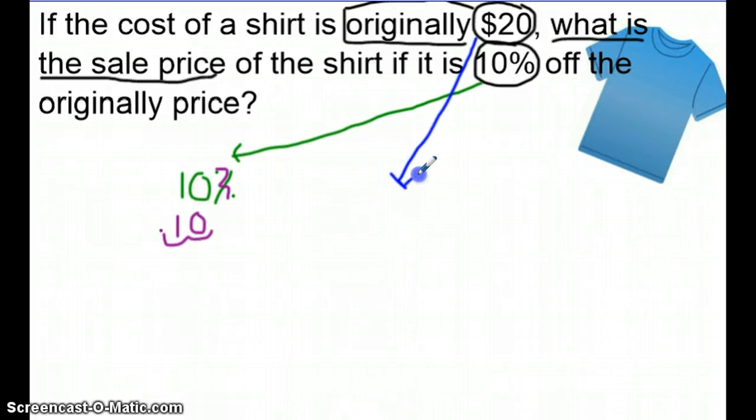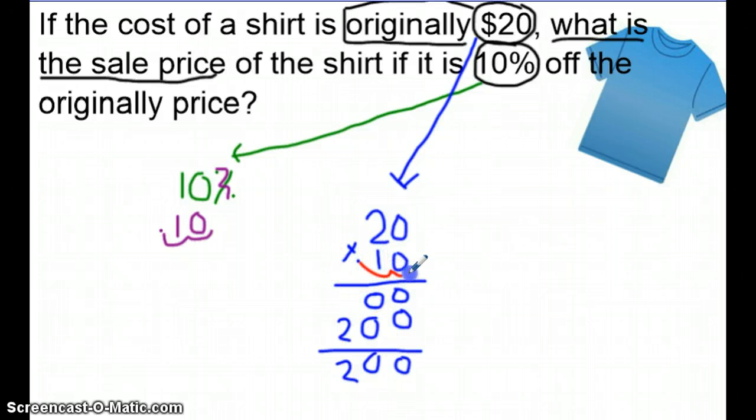After we converted the percent into a decimal, we are going to multiply it by the original price. So step two, multiplying it by the original price. 20 times the part, and we are going to get 0 times 0 is 0, 0 times 2 is 0. Add that 0 as a place value. 1 times 0 is 0, 1 times 2 is 2. Add them up, 0 and 0, 0 plus 0, and 2. Remember, we have two spots for your decimal point, so we have to move it two spots over.